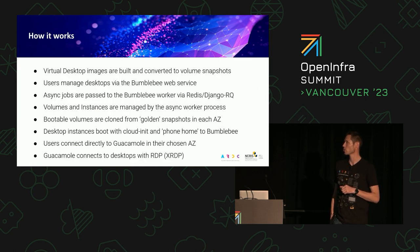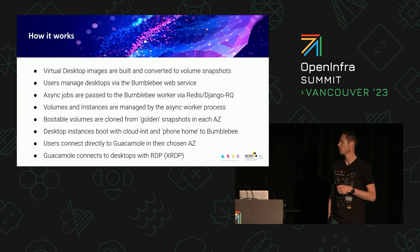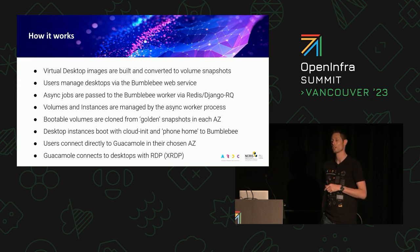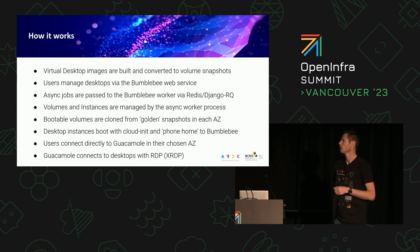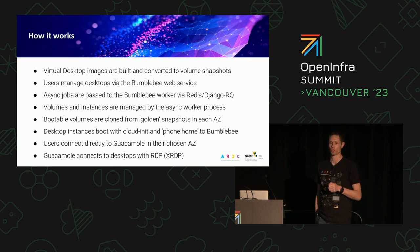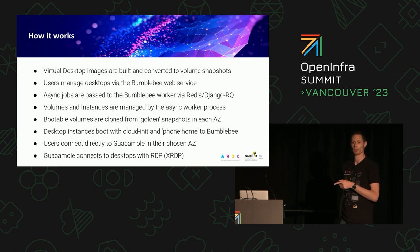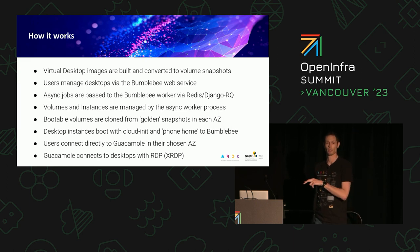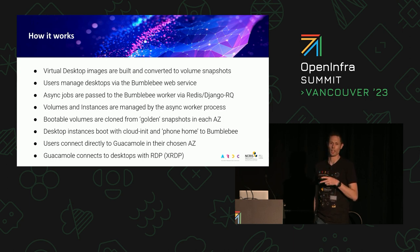How it works: virtual desktop images are built with Packer and we use Ansible for provisioning. We convert them to volume snapshots, which are stored in each of the availability zones we run in — cloning from snapshot is the fastest way to get storage set up. Users manage their desktops via the Bumblebee web service. As part of that process, when users create, resize, or delete a desktop, the Bumblebee web service creates an asynchronous job.